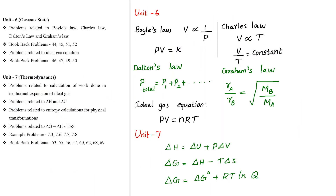Unit 6: Gaseous State. This unit has problems related to Boyle's law, Charles' law, Dalton's law, and Graham's law. The relevant bookback problems are: 44, 45, 51, 52.